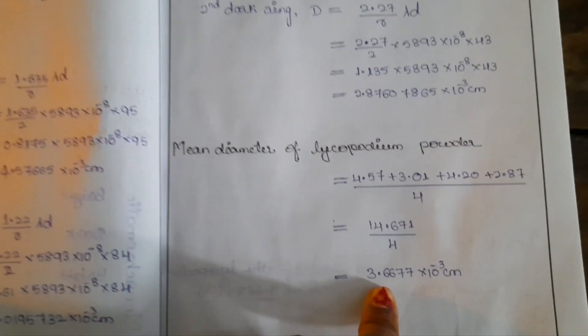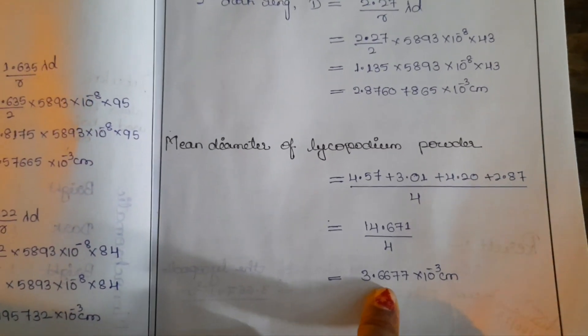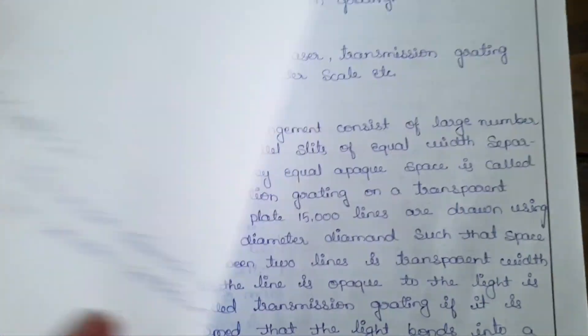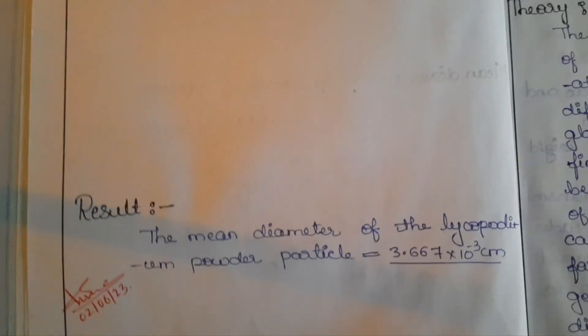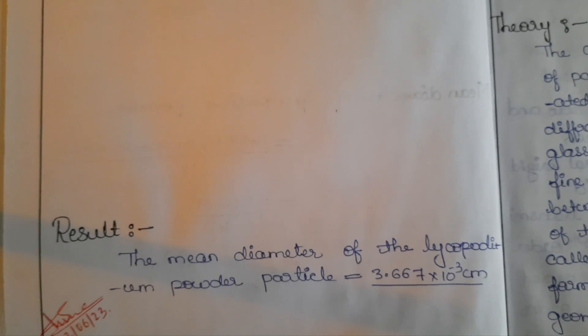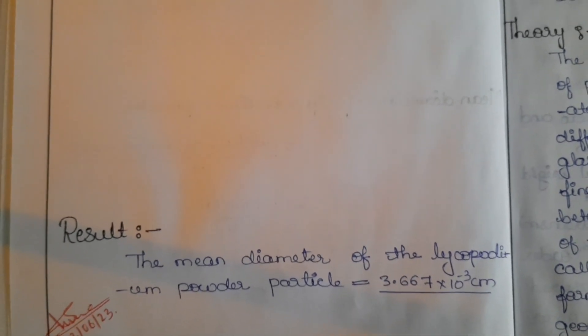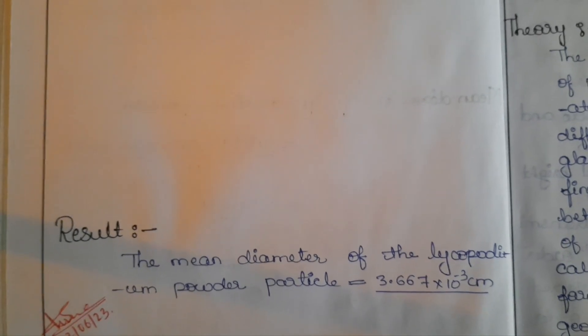You will get the diameter of the given lycopodium particle, that is 3.66 × 10 to the power minus 3. Then you can write the result. So this is the way to do this experiment. I hope this video is helpful. Thank you.